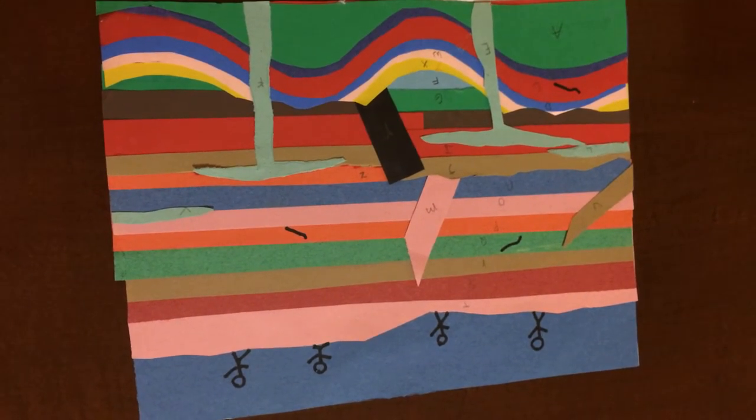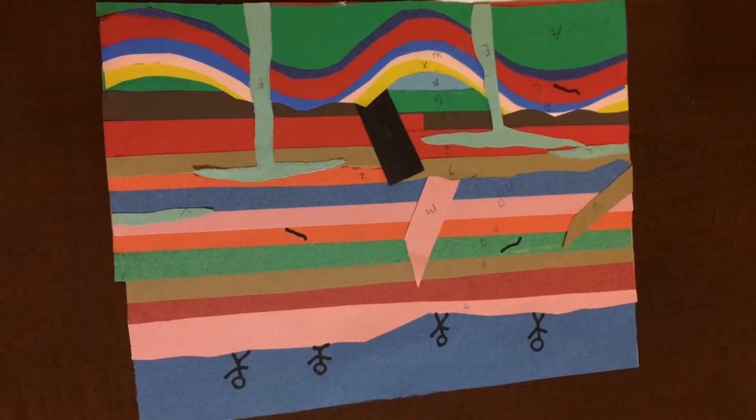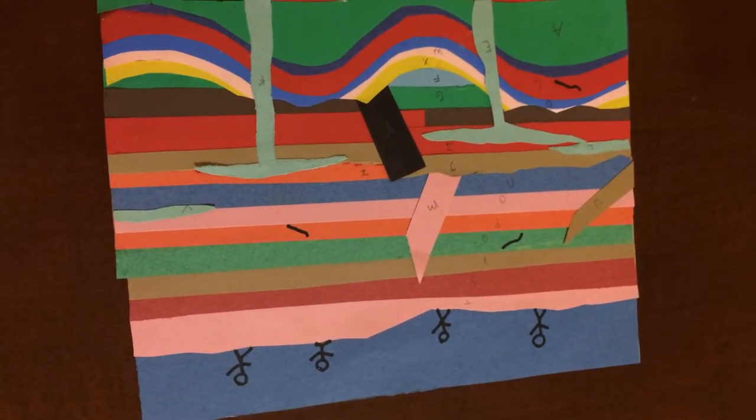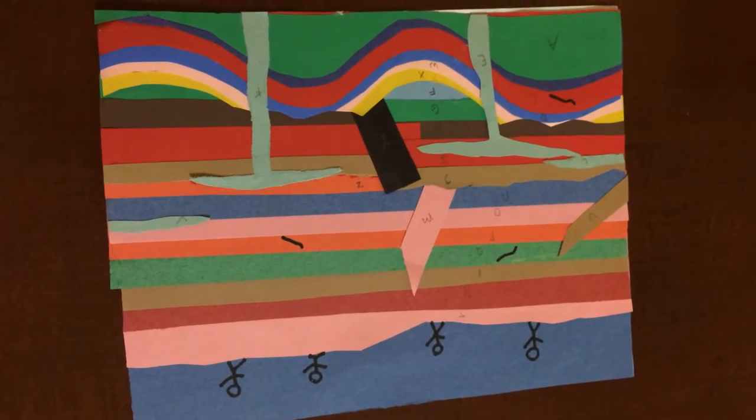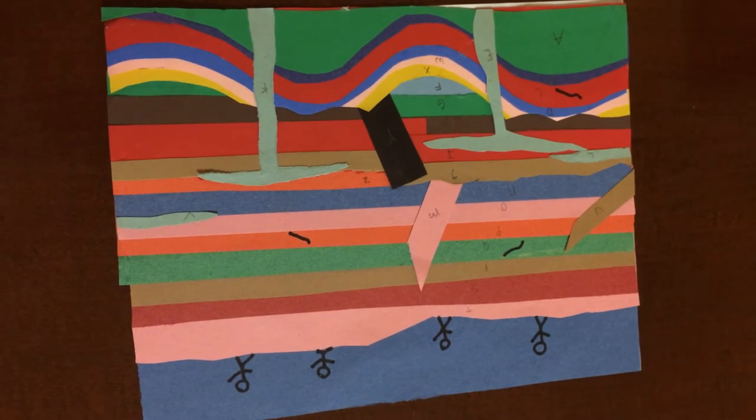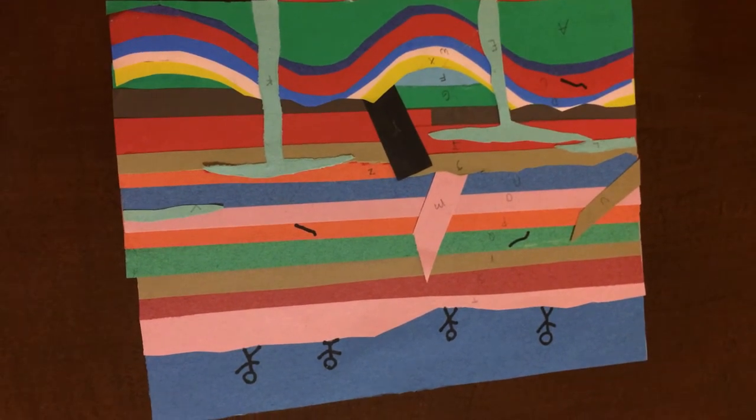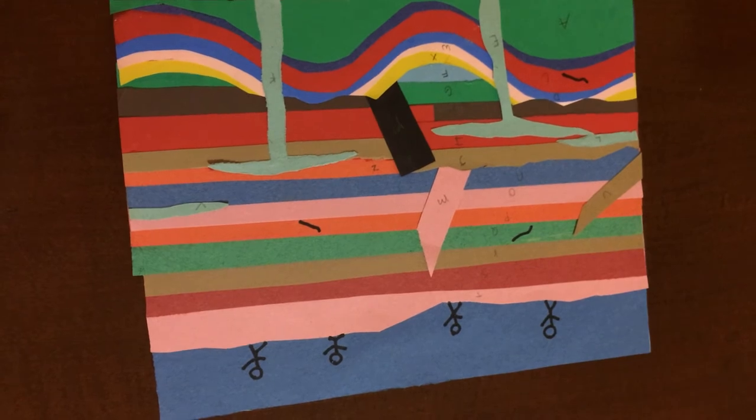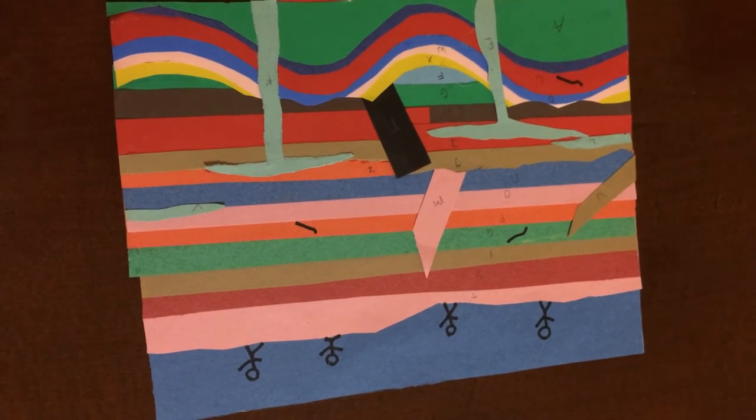Next, an intrusion. This type of intrusion was a sill. A sill is when magma cuts through rocks vertically. Then a dike occurred. A dike is when magma pushes up towards the surface through cracks in the rocks.